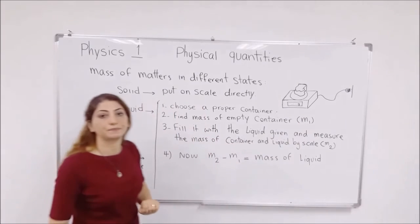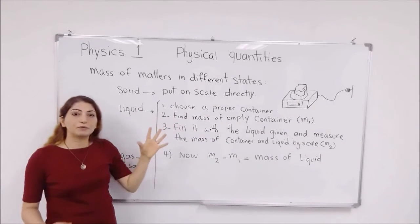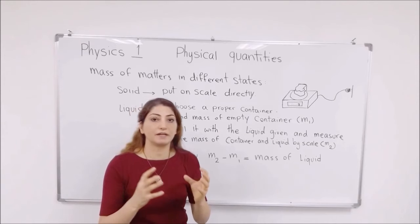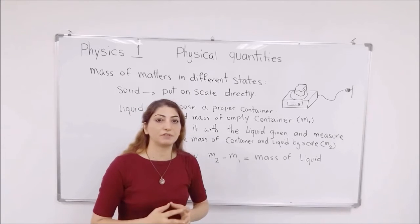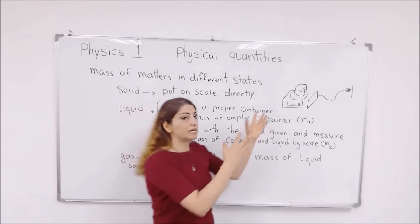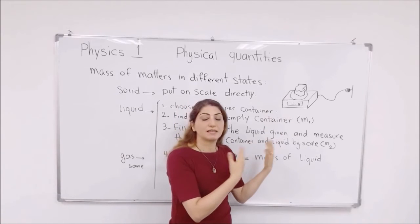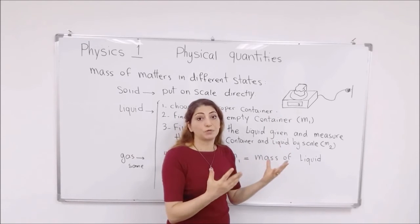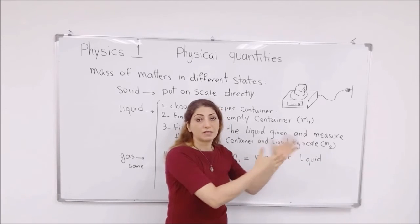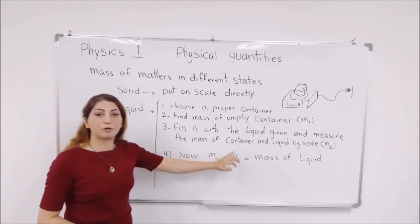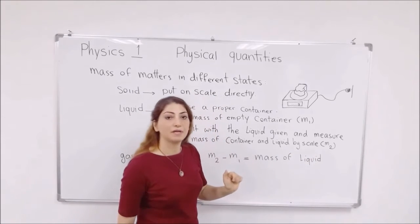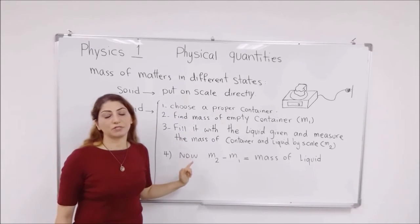Then you go and find the mass of the container and the liquid. Now, you fill the container with that specific amount of liquid that is given to you that you have to measure. Then fill it, then put both of them together on the scale. Read the second mass. The mass should be usually bigger because this is the mass of the container plus the liquid. Call this measured mass as M2.